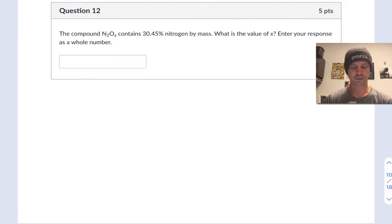Question 12 tells us that we have a compound with the empirical formula N2OX and that it contains 30.45% nitrogen by mass. The formula could be empirical or molecular. What we want to know is the value of x, and we want to enter our response as a whole number, because this is going to be a stoichiometric number of oxygen atoms within a formula unit of this compound.